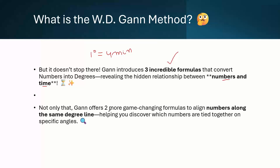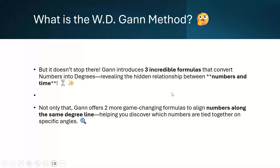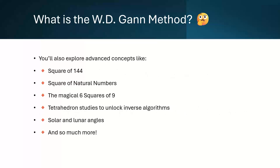Gann has also given two more formulas to find out the numbers along the same degree line. Suppose one number is at 30 degrees — that number X alone will not be sitting on this line. Many other numbers will also be sitting on this particular 30-degree line. How to find them out? He has given two different formulas for this. These are the basics of W.D. Gann — what you see in different internet forums speaks about Square of 9 only, and doesn't speak about Hexagon, Tetrahedron and other things.